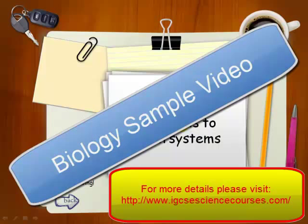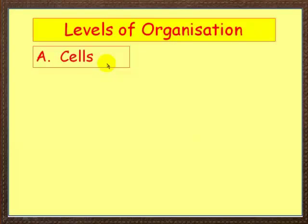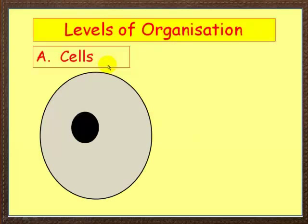In this video, we're going to look at levels of organization from cells to organ systems. In terms of levels of organization, let's start with very, very basic. The most basic level is the cell, and let's draw ourselves a simple animal cell. Here's an animal cell — you're probably familiar with this — let's look at all the different organelles.